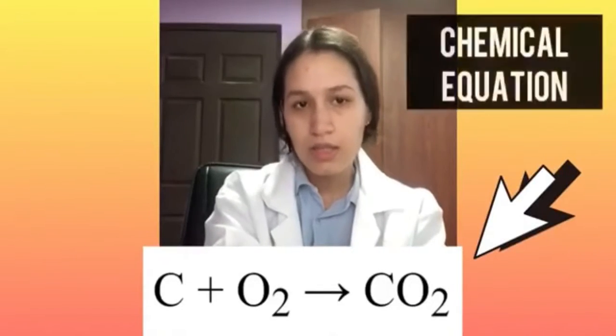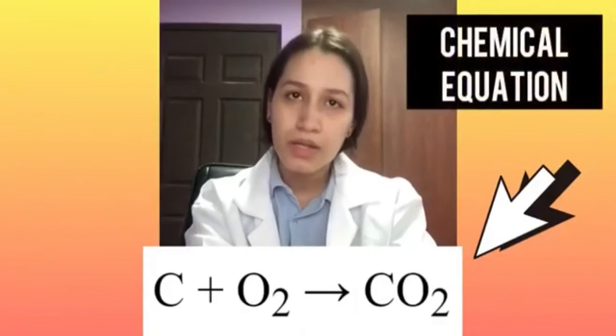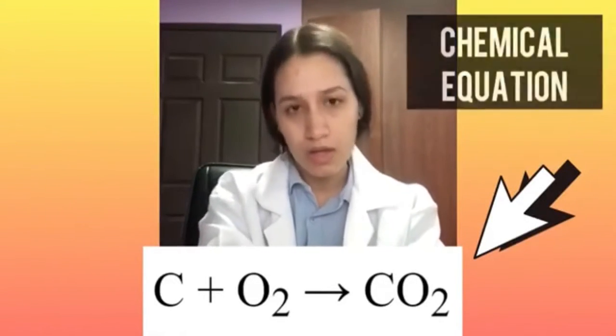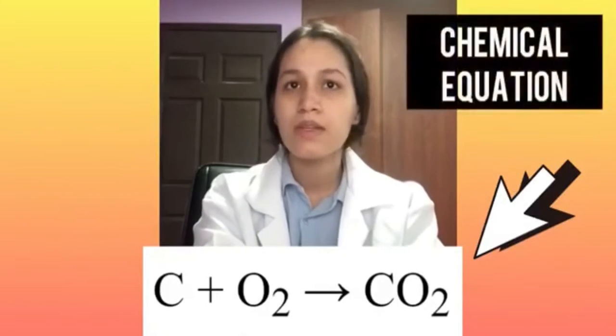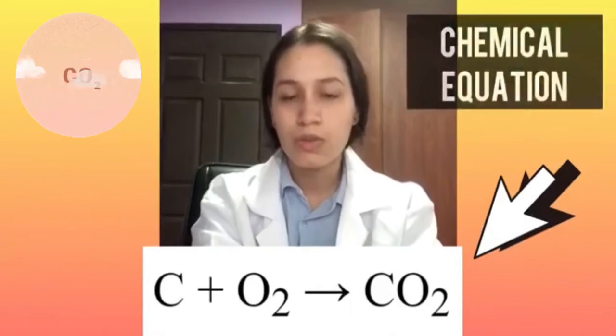To express reactions, chemical formulas can be joined together in an equation. A chemical equation is an expression that uses symbols to show the relationship between the starting substances and the substances that are produced by a chemical reaction. An example of a chemical equation is C (carbon) plus O₂ (oxygen) equals CO₂ (carbon dioxide).